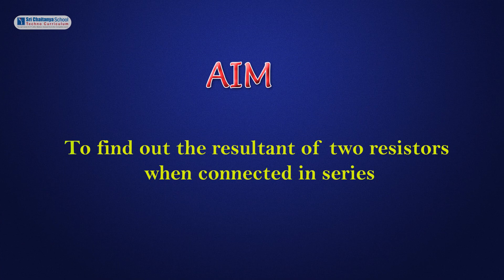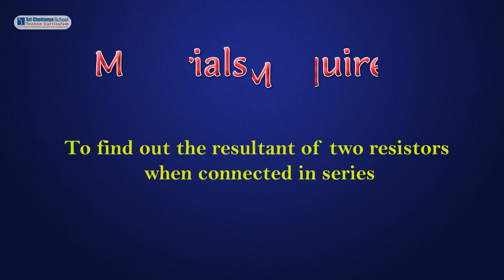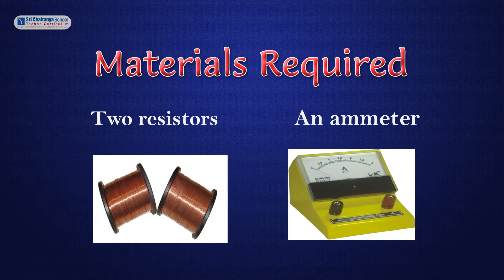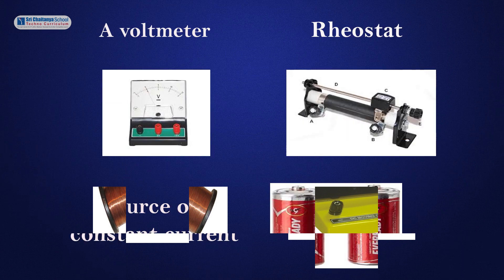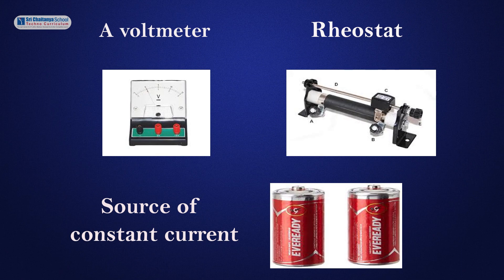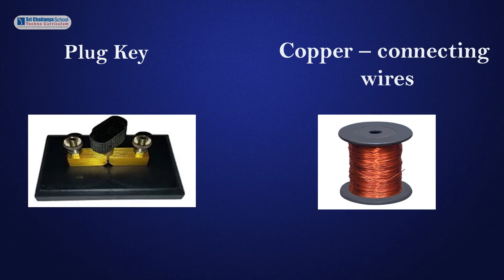The aim of this experiment is to find out the resultant of two resistors when connected in series. The materials that are required: two resistors, an ammeter, a voltmeter, a rheostat, a source of constant current, a plug key, and copper connecting wires.